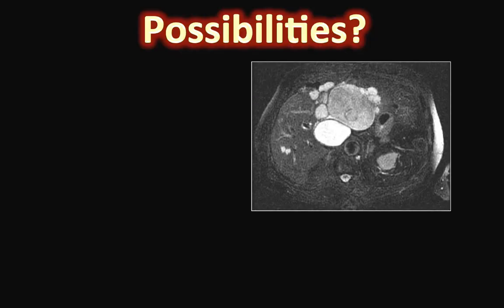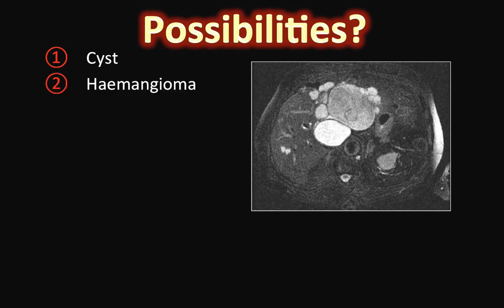So what are the possibilities? Hepatic cysts, whether isolated cysts or in the context of polycystic liver disease, do not have this complicated, septated or loculated appearance. Hemangiomas have a characteristic appearance after IV contrast administration with filling from the periphery inwards.